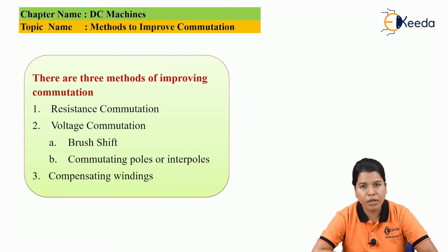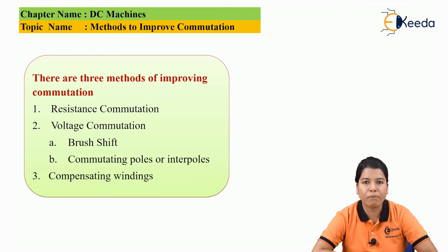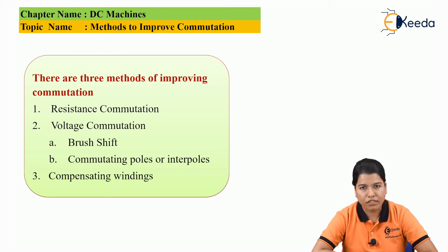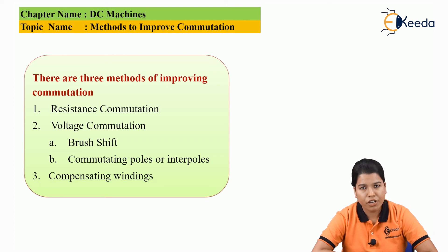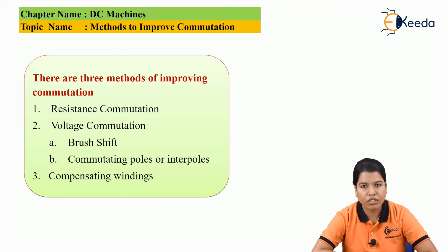The next method to improve the commutation is by using compensating windings. The compensating windings are placed inside the slots on the pole face, exactly parallel to the armature conductor, and connected in series with the armature conductor. The current in the compensating windings and the current in the armature conductor are exactly the same but of opposite polarity. Due to this, the MMF produced in the compensating winding neutralizes the MMF in the armature winding, thereby improving commutation.